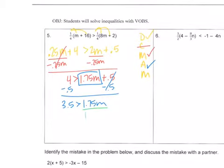And then divide by 1.75, and 2 is greater than m, or m is less than 2.